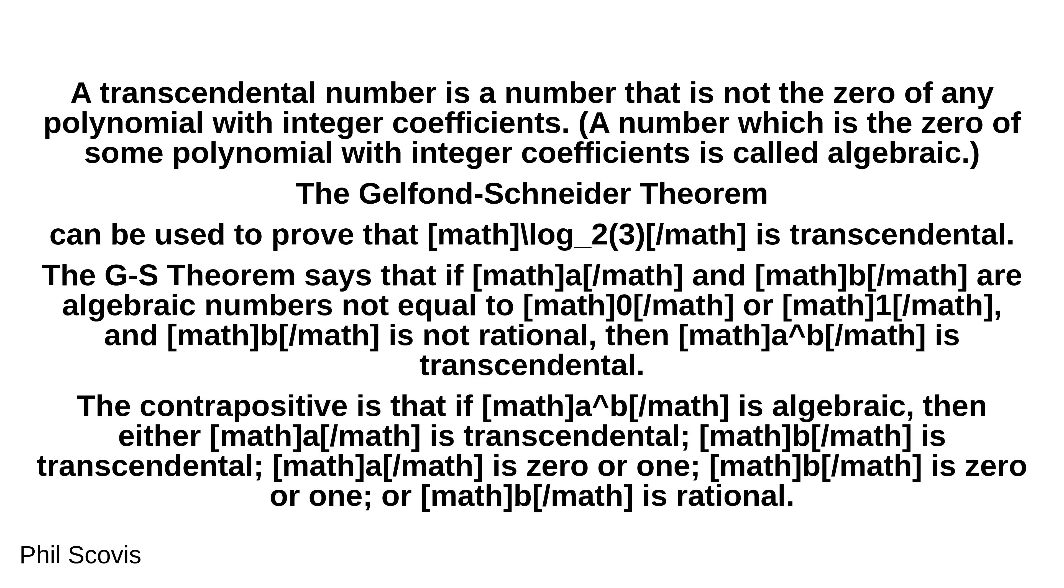The contrapositive is that if a to the power b is algebraic, then either a is transcendental, b is transcendental, a is 0 or 1, b is 0 or 1, or b is rational.